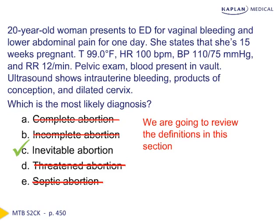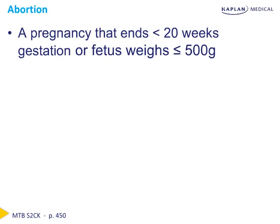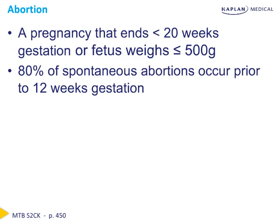We're going to review all the different definitions and understand why this is the most correct answer. Abortion is defined as pregnancy termination at less than 20 weeks gestation, or with a fetus born less than 500 grams. About 80% of spontaneous abortions are going to occur before 12 weeks gestation.